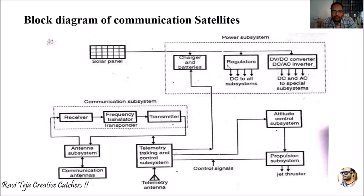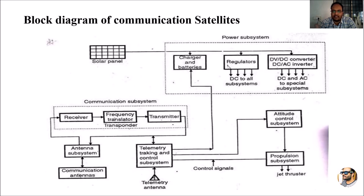These are the basic blocks of communication satellites: the solar panel, power subsystem, communication subsystem, telemetry tracking and control subsystem, attitude control subsystem, propulsion control subsystem, and antenna subsystem. When all these segments work together combinedly, we can successfully establish powerful communication between an earth station and satellites.